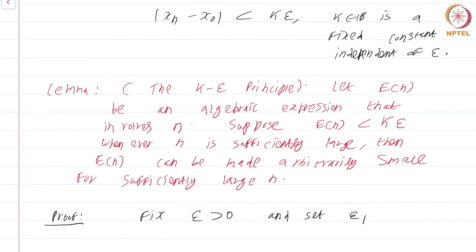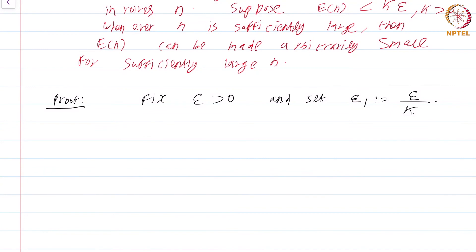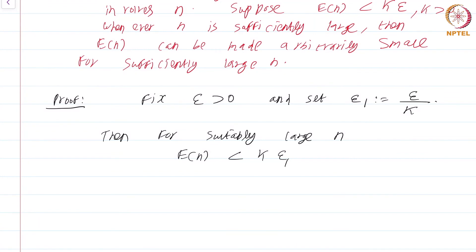There is one catch: E of n less than k·epsilon requires k to be greater than 0 — this is crucial. Fix epsilon greater than 0 and set epsilon_1 by definition to be epsilon divided by K. Then for suitably large n, E of n is less than k·epsilon_1. Why is this the case? In the hypothesis we said E of n is less than k·epsilon whenever n is sufficiently large — that epsilon could be any number whatsoever.